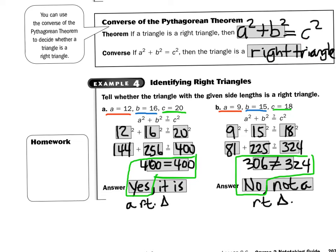Take a look at example 4. Look at A. They told us that the side A was 12, B was 16, and C was 20. And they just want us to tell them if this forms a right triangle. So start off with A squared plus B squared equals C squared. And let's plug in 12 for A, 16 for B, and 20 for C. And now we have to do a little math.